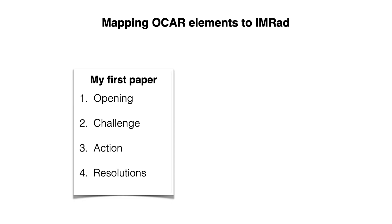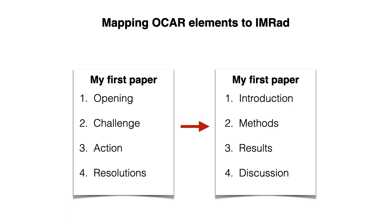Hopefully you've had a chance to go through the exercise, and now you'll have a rough idea of the kinds of things you're going to discuss in each of the sections. But you might be thinking that you don't usually see papers with headings such as opening, challenge, action, resolutions. Most papers have sections such as introduction, methods, results and discussion, or some variation of that theme. So what we'd like to do now is map the elements from OKAR to the section headings in a research paper, collectively known as IMRAD.